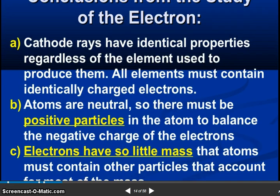1 over 1840, the mass of a hydrogen atom has 1 unit of negative charge. So friends, conclusion from the study of electrons. The cathode rays have identical properties, regardless of the elements used to produce it. All elements must contain identically charged electrons. Atoms are neutral, so there must be positive particles in the atoms to balance the negative charge of the electrons.